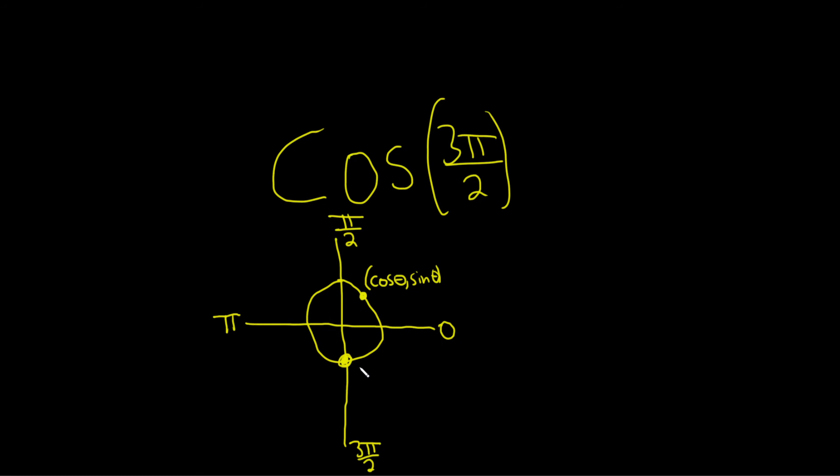So this point here has x coordinate 0 and y coordinate negative 1 because it's the unit circle, so you would travel a distance of 1 to get to this point.